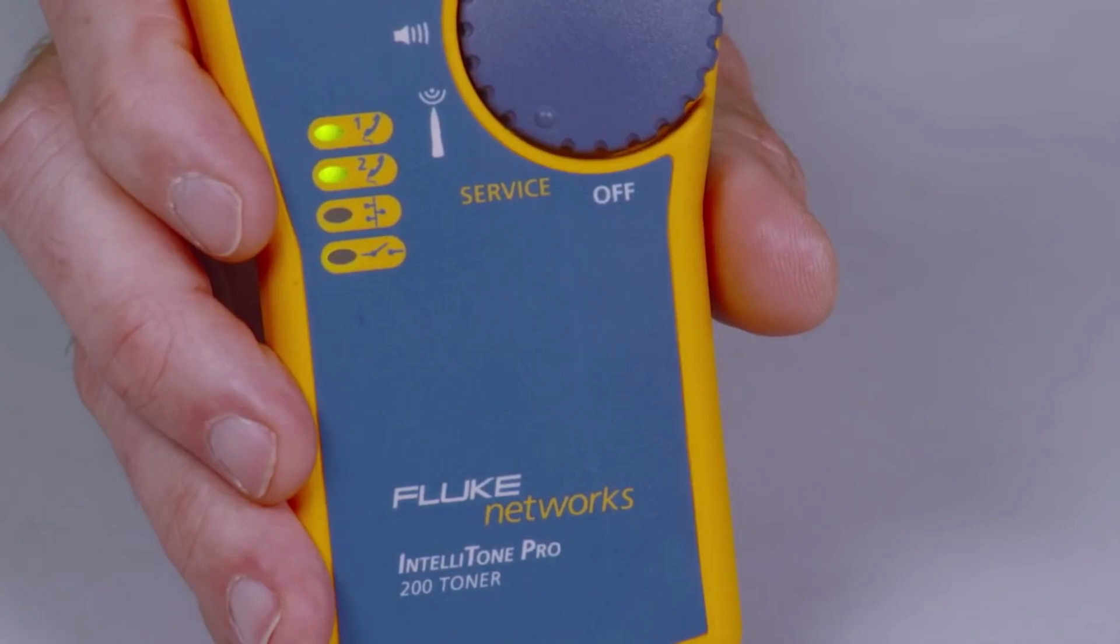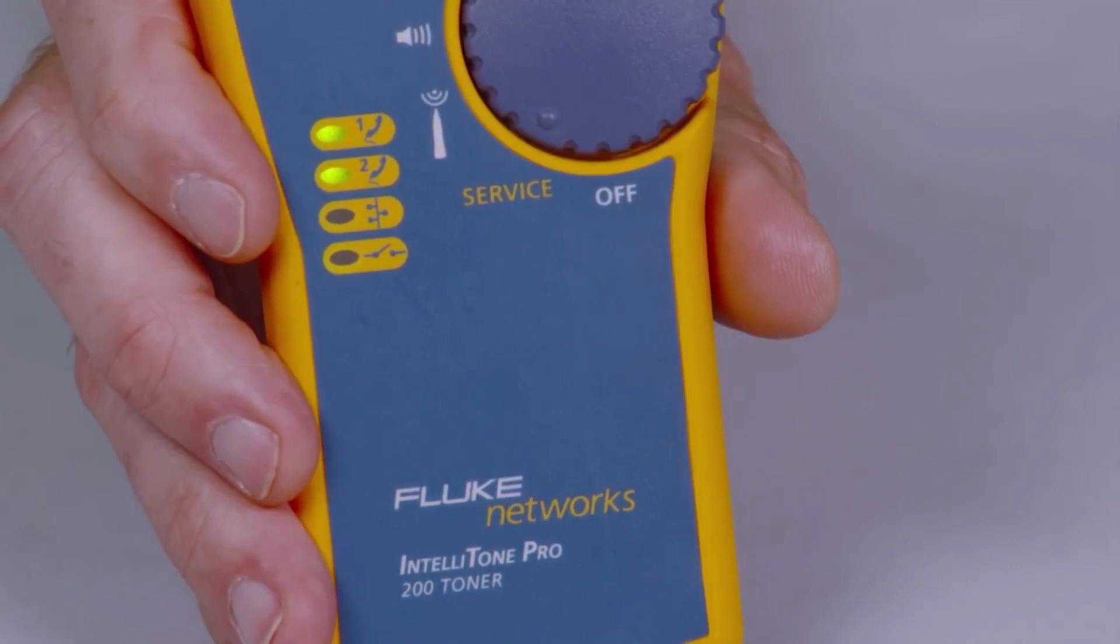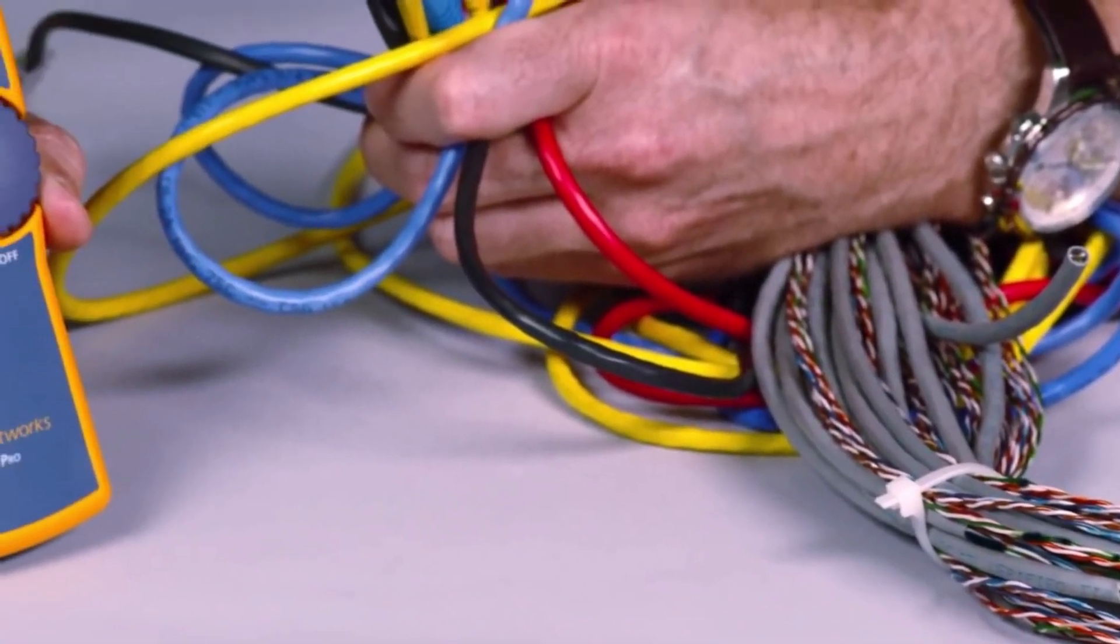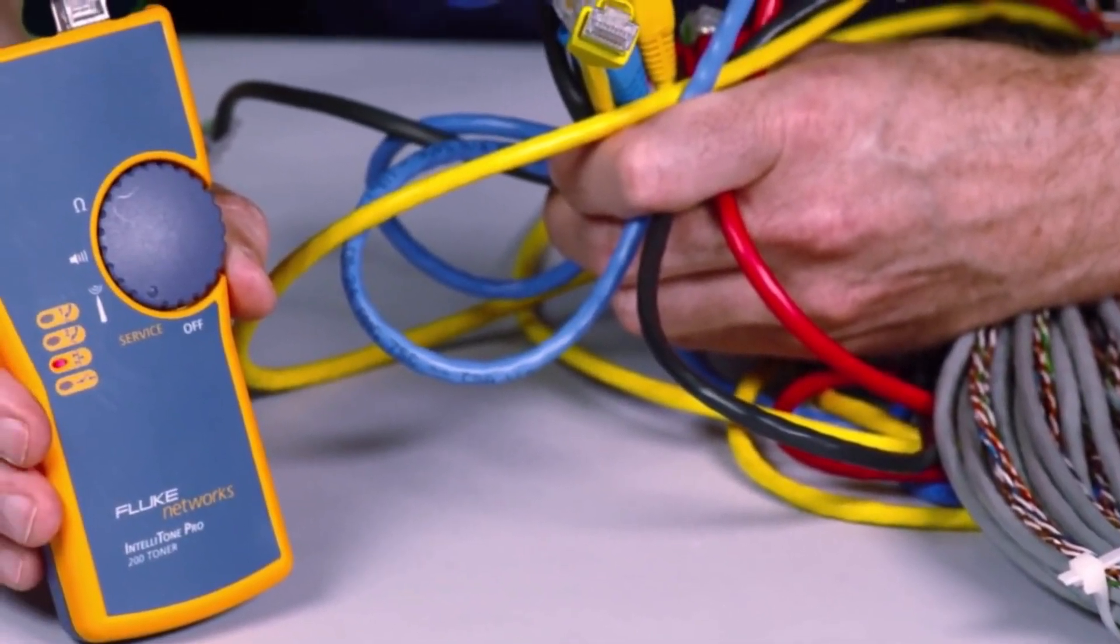Confirm telecom circuits with the built-in talk battery capability and validate telephone service and polarity. Need to validate Ethernet service? No problem.